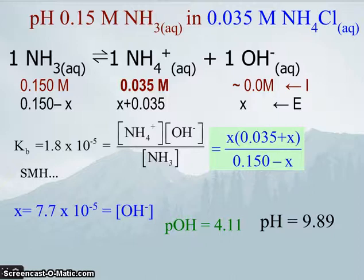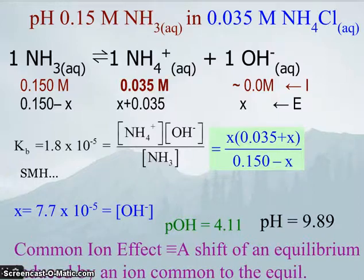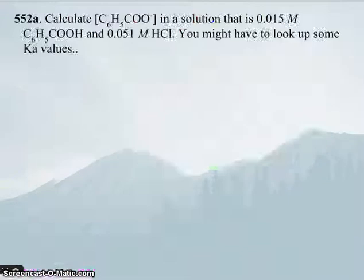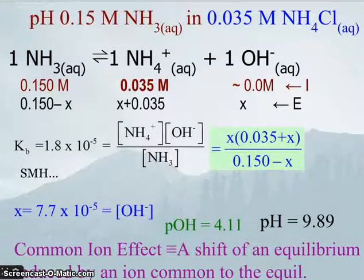Now there's a term for this sort of concept, and it's called the common ion effect. A shift of an equilibrium is reduced by an ion common to the equilibrium.